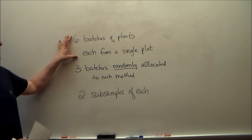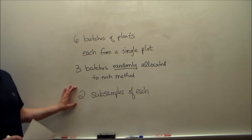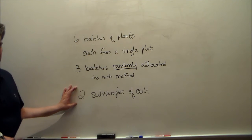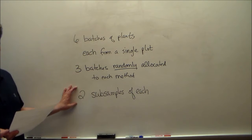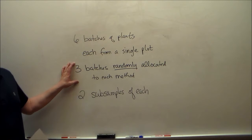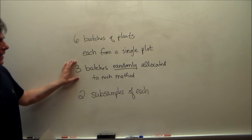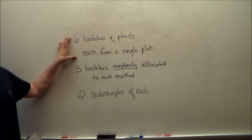So the way we've got this: we have six batches, three going to method A and three going to method B. Of those three going to method A, you're going to make two measurements on each — so six measurements for A and six measurements for B. Notice the subsamples are nested within the batch.